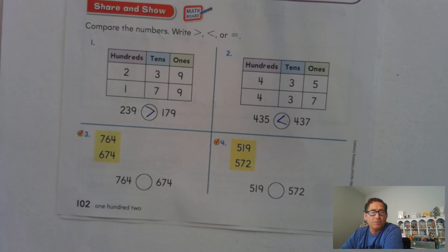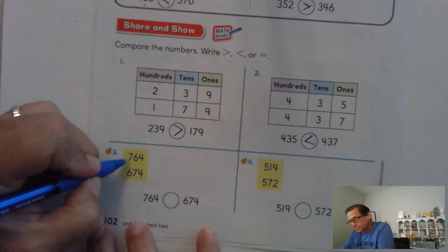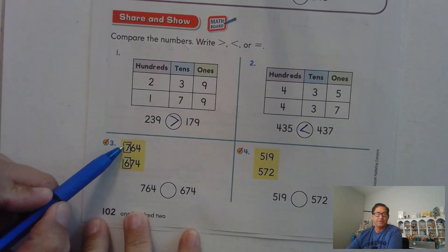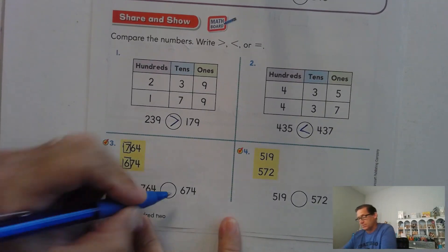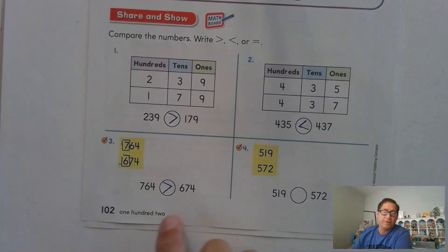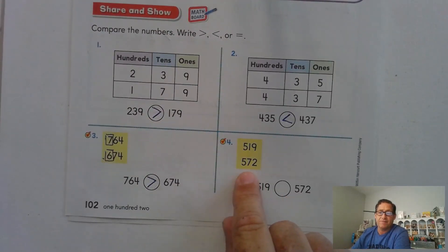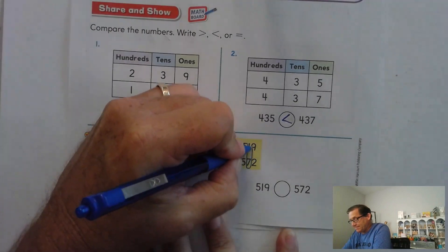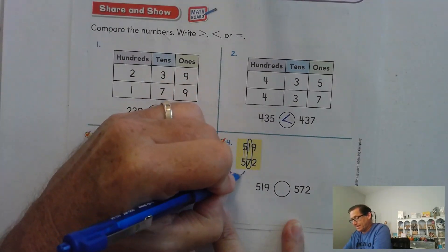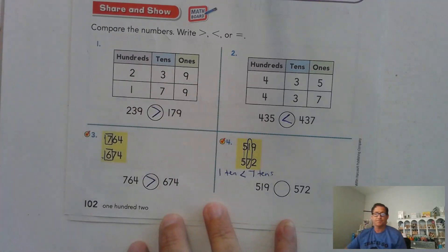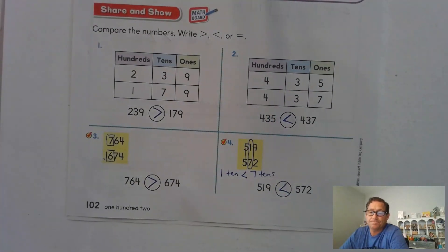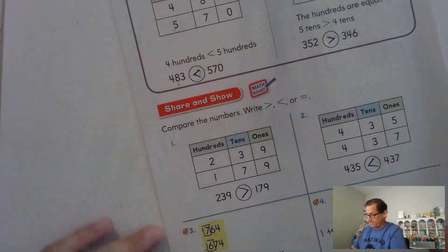Number 3, 764 compared to 674. So if we look at the hundreds place, we already know which one's larger. 700 is bigger than 600. So 764 is greater than 674. 519 compared to 572. We look at the fives. They're the same. Let's look at the one and the seven. Well, 1 ten is less than 7 tens. So 519 is less than 572.